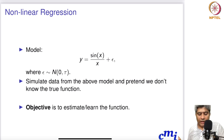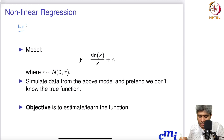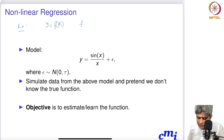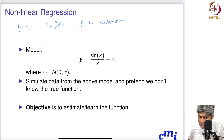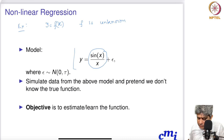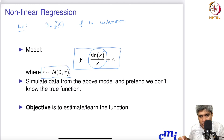Let me start with an example. Suppose there is only one y variable and one x variable, and the true relationship between y and x is some f that is unknown. Suppose the true relationship is this function which is generating the data, where epsilon follows some normal noise, normal(0, tau), and y = sin(x)/x is the actual true model, but we don't know that this is the model.